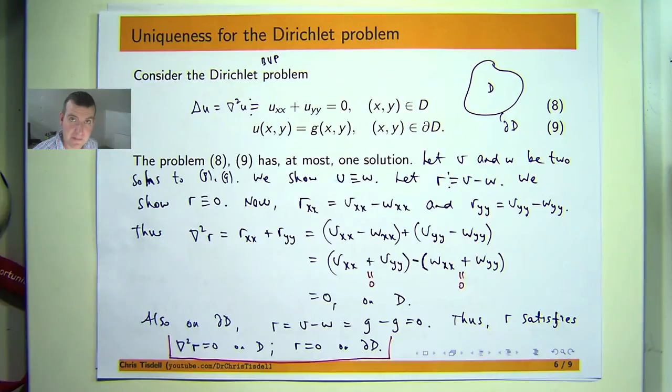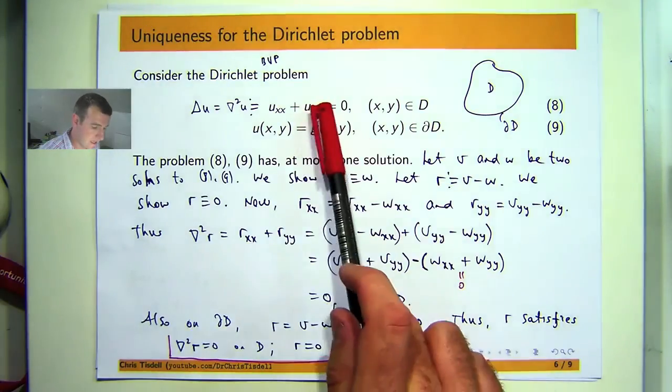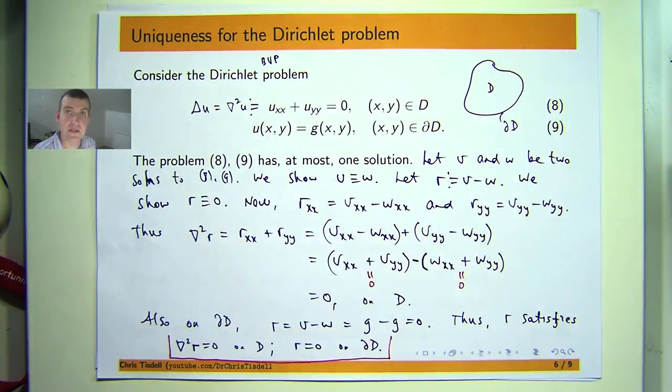Now, there are some other applications. Here we're working in the plane, but you can get this result for when u depends on n variables. It's not a big deal and Green's identity works for any number of dimensions. So that's another way to take these ideas and generalize them.